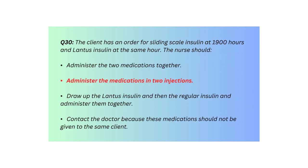Q30. The client has an order for sliding scale insulin at 1900 hours and Lantus insulin at the same hour. The nurse should: administer the two medications together, administer the medications in two injections, draw up the Lantus insulin and then the regular insulin and administer them together, or contact the doctor because these medications should not be given to the same client.